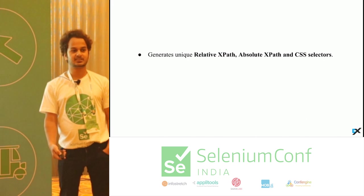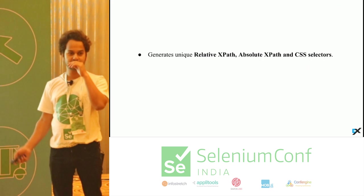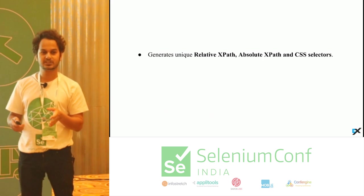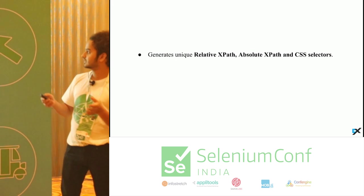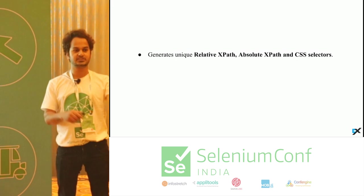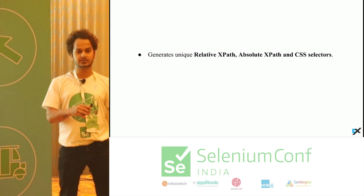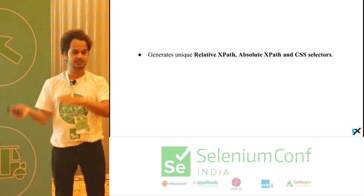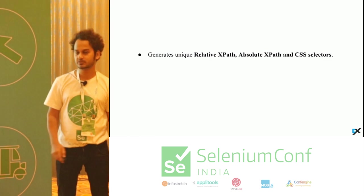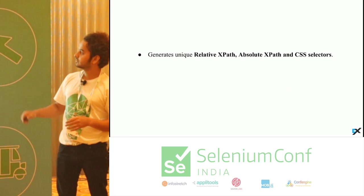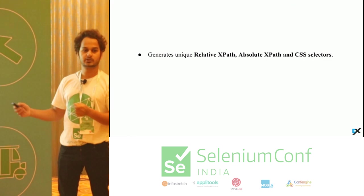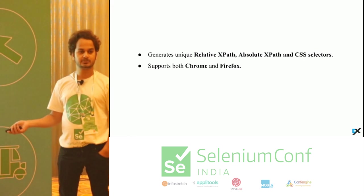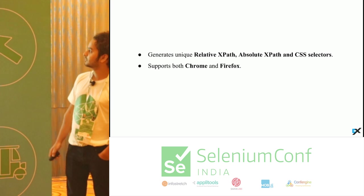Kropath helps generate relative XPath, absolute XPath, and CSS selectors. Some time back, Firebug and FirePath were deprecated in the new version of Firefox. I was facing problems while writing scripts on Firefox — I had to first verify on Chrome, get the locators from Chrome, and then use them for Firefox. So from there I thought we should add support for Firefox as well. Now Kropath supports both Firefox and Chrome.